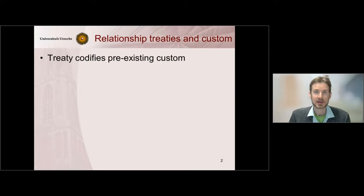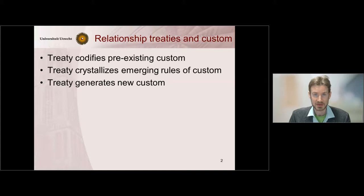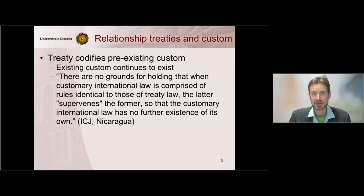First of all, a treaty may codify pre-existing norms of customary international law. Second of all, a treaty may crystallize emergent rules of customary international law. And third, a treaty may generate new customary norms of international law. I will look at these three in turn, beginning with the first scenario where a treaty codifies pre-existing customary international law.